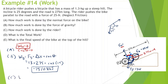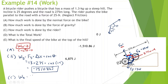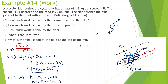How much work is done by the rider? Work applied is equal to force applied times displacement times cosine of theta. Force applied is 25 N, displacement is 275 m. The force applied is going up the hill and the displacement is also going up the hill — they're in the same exact direction, so the angle is zero degrees, meaning cosine equals 1. So 25 times 275 gives us 6,875 joules of work done by the rider.